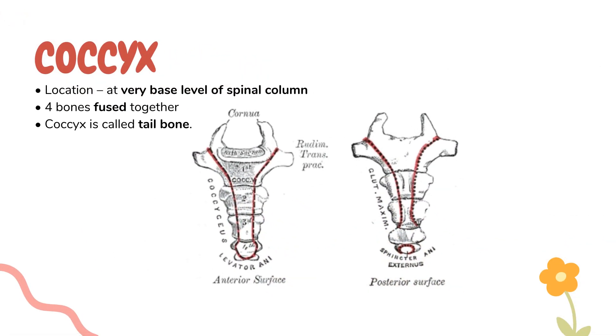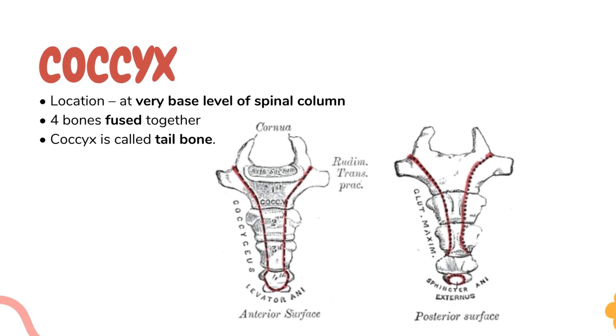Coccyx. This is located at the very base of the spinal column. Here 4 bones are fused together. This coccyx is called the tailbone.